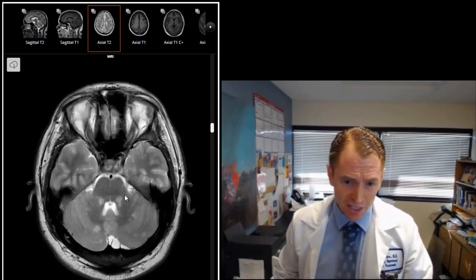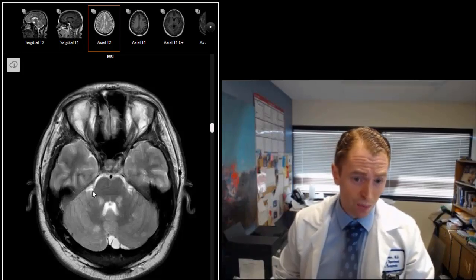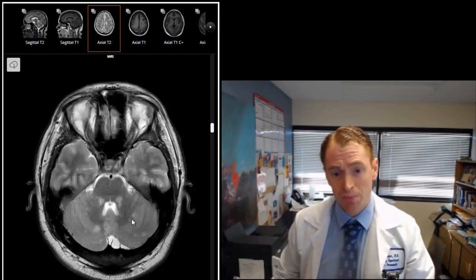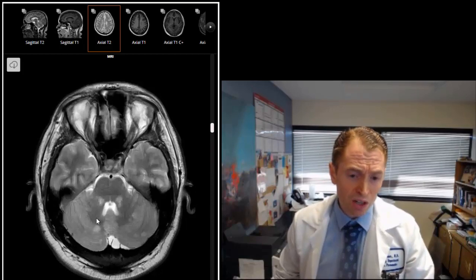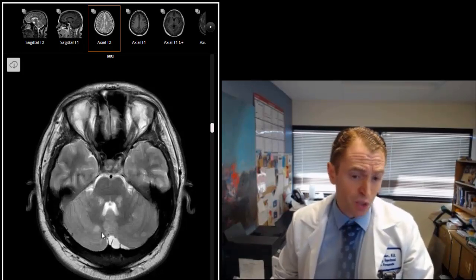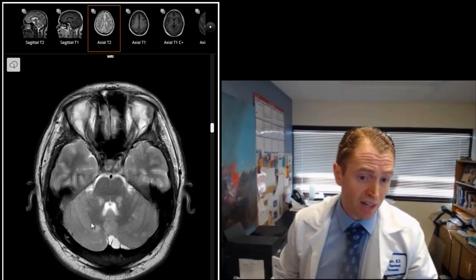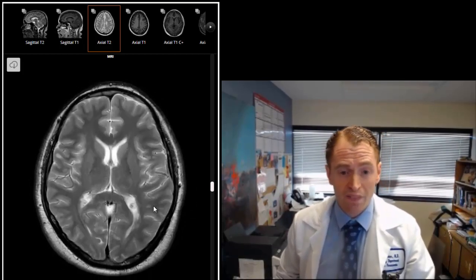You can see these lesions in the middle cerebellar peduncle. These could be associated with tremor and clumsiness. You can see all these spots in the cerebellum which could be related to imbalance. But the thing about multiple sclerosis is we may not be looking at permanent tissue damage. We could be looking at lesions that have demyelination and remyelination. So they're functioning fairly well despite that they look very abnormal on the MRI.